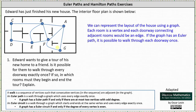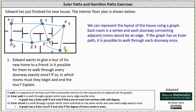For the next step, we need to determine if there's an Euler path. Let's check the degrees of the vertices. Vertex A has degree three because three edges emanate from vertex A. Vertex B has degree four because four edges emanate from vertex B. Vertex C has degree two. Vertex D has degree two. Vertex E has degree three. Vertex F has degree four and vertex G has degree two.